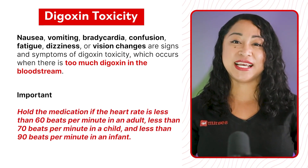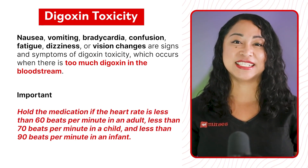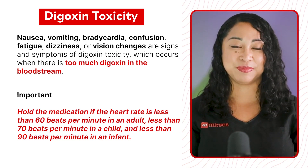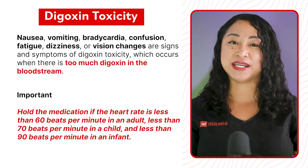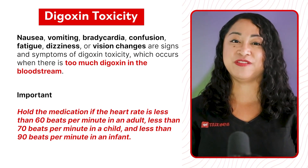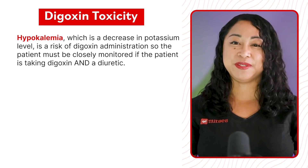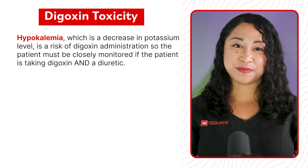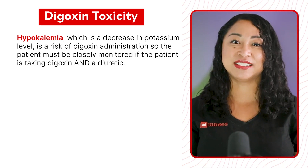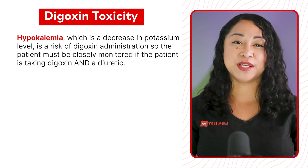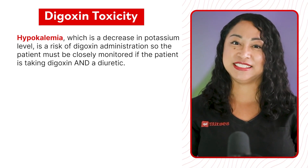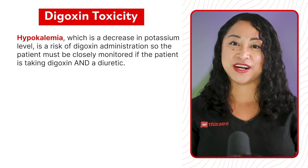Hold the medication if the heart rate is less than 60 beats per minute in an adult, less than 70 beats per minute in a child, and less than 90 beats per minute in an infant. Hypokalemia — a decrease in potassium level — is a risk of digoxin administration, so the patient must be closely monitored if taking digoxin and a diuretic.